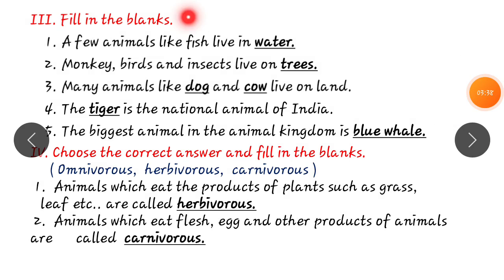Next, fill in the blanks. A few animals like fish live in water. Monkey, birds, insects live on trees. Many animals live on land. Our national animal is tiger. Our national bird is peacock. Our national flower is lotus. And the biggest animal in the animal kingdom is blue whale.